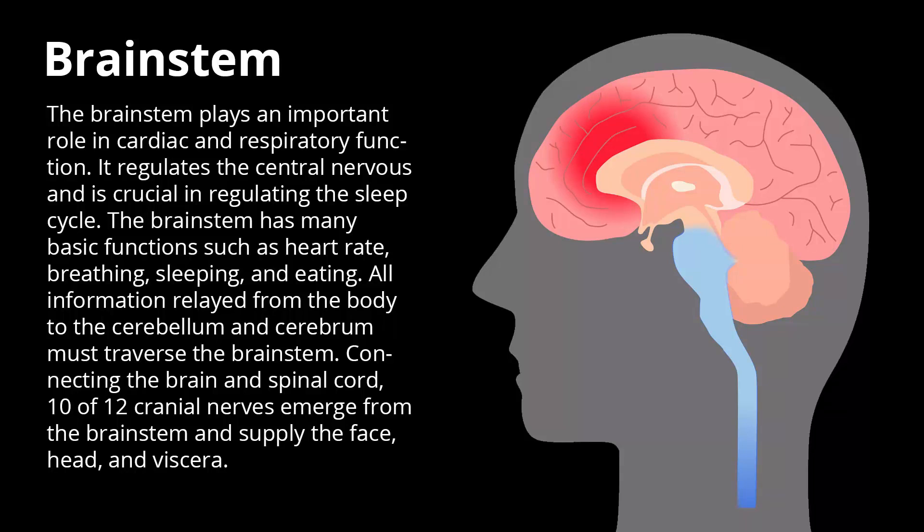All information relayed from the body to the cerebellum and cerebrum must traverse the brainstem. Connecting the brain and spinal cord, 10 of 12 cranial nerves emerge from the brainstem and supply the face, head, and viscera.